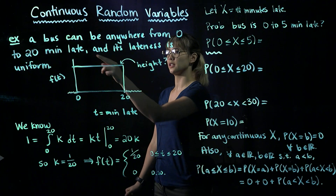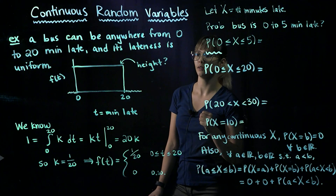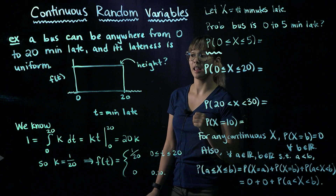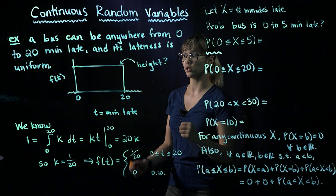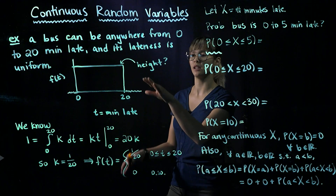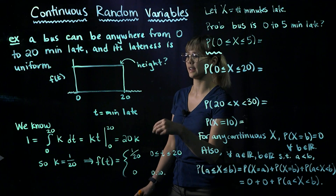Since it's uniform, we have just a flat horizontal line. In order to write down this PDF, we need to figure out what the height of this line is.